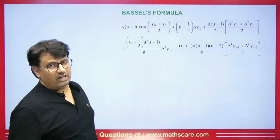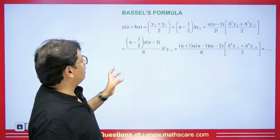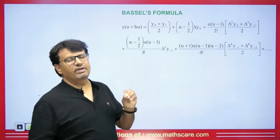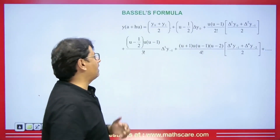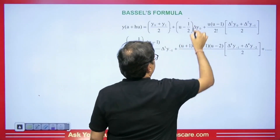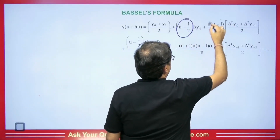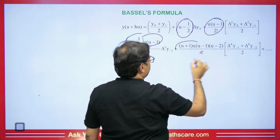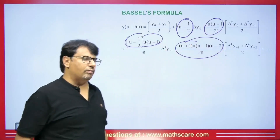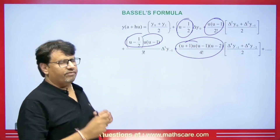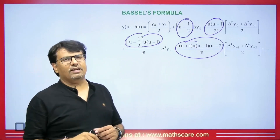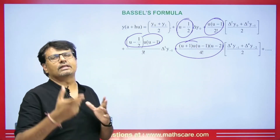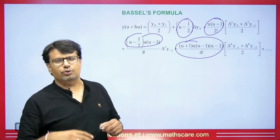So we will talk about Bessel formula now. To learn the formula you have to find a different approach. You have to focus on the coefficients first. The coefficients are a little different here. Because in Sterling or Gauss forward/backward or Newton forward/backward they had a fixed pattern, but here the pattern is quite different.